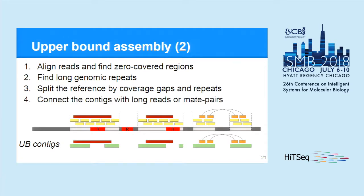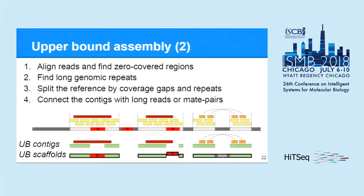These contigs can further be enlarged and connected with each other by long reads or mate pairs. We perform this connection and obtain upper bound scaffolds, or simply the upper bound assembly. Gaps between contigs can be filled either with undefined nucleotides — even if the gap was caused by a coverage drop — or by reference sequence otherwise. We also add unresolved repeats as a separate scaffold.